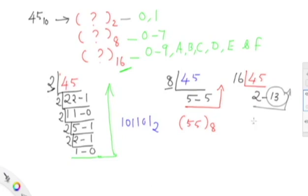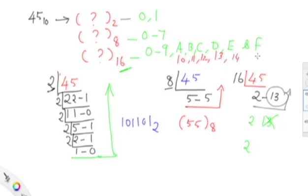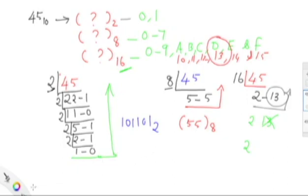We have 2 and 13. We cannot write this as 213 — that would be wrong. We write 2 as it is since 2 is present in the hexadecimal number, but 13 is not directly available. Since D equals 13, instead of writing 213 we write 2D, which is to the base 16. So 2D base 16 is the hexadecimal value for the decimal number 45.